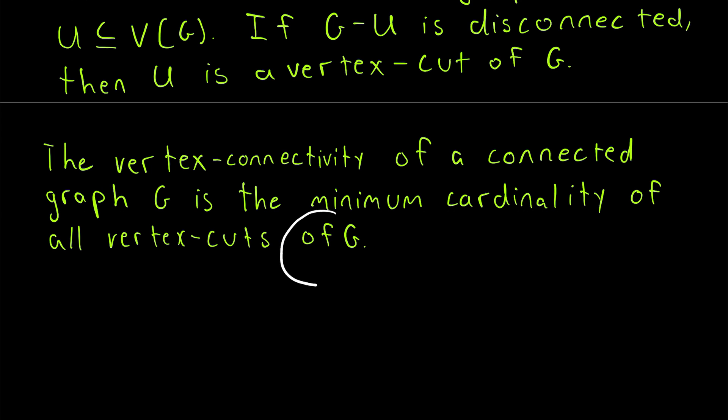So among all vertex cuts of a graph G, the smallest cardinality among them is the vertex connectivity of the graph, which is typically denoted like this. This is not the letter K, it's actually the Greek letter Kappa.